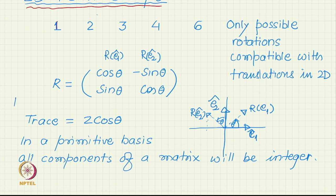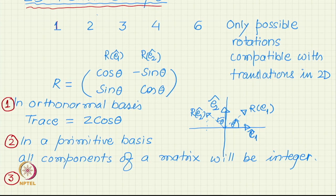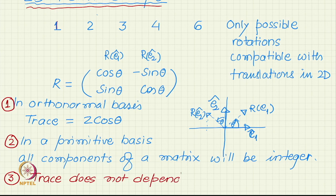We are using 2 different basis. In orthonormal basis, the first point was this. The second point is that in a primitive basis. But the third point is that trace does not depend on basis. We prove that in 3D, that proof is applicable to 2D also. When you change the basis, matrix numbers will change, but when you add the diagonal terms you will get the same number.